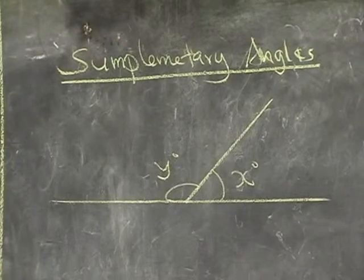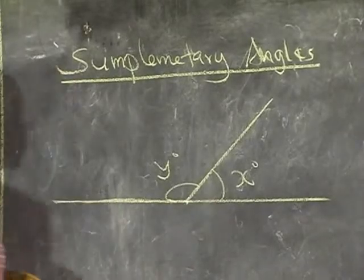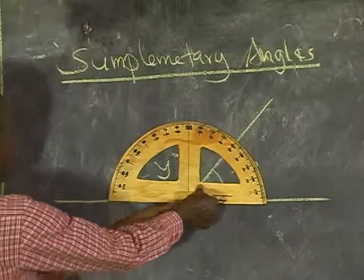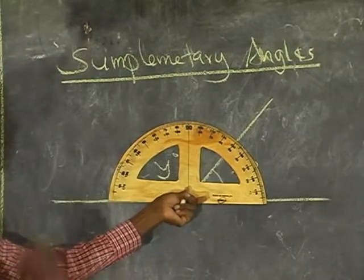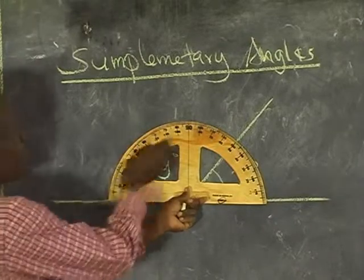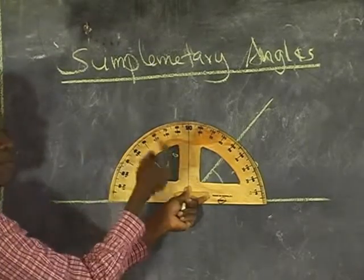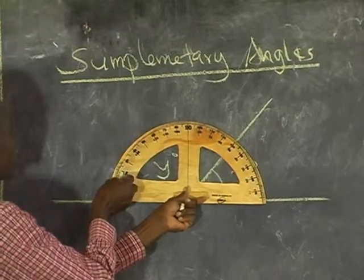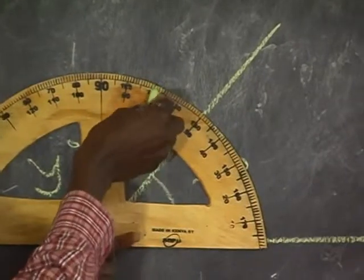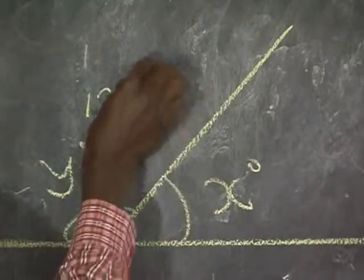I want to identify the size of the angle marked Y and the size of the angle marked X. To get the size of any angle you must take one of the two lines forming the angle as your baseline. I am going to take this line up to this point as my baseline and place my protractor in this form. I will count from this end up to where the line passes. The scale is at intervals of 10: 0, 10, 20, 30, 40, 50, 60, 70, 80, 90, 100, 110, 120, 130. The size of the angle marked Y is 130 degrees.